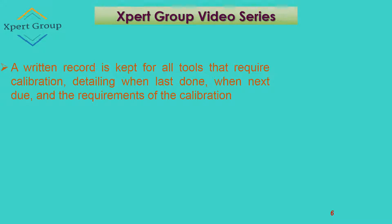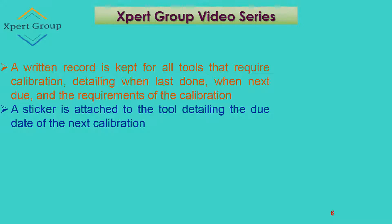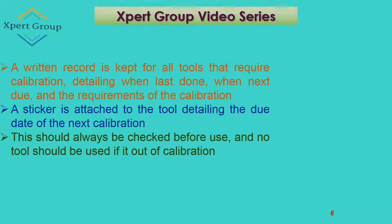If we are performing calibration of certain equipment, we need to keep a record. A written record is kept for all tools that require calibration, detailing when it was last done, when it is next due, and the requirements of the calibration. For this purpose, a sticker is attached to the tool detailing the due date of the next calibration, indicating when calibration was done and when the next date is due.